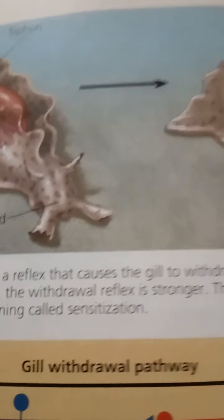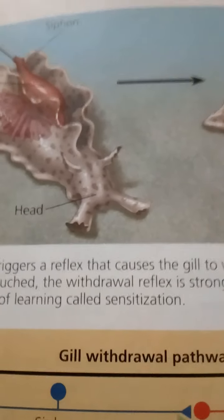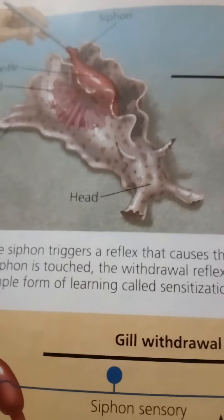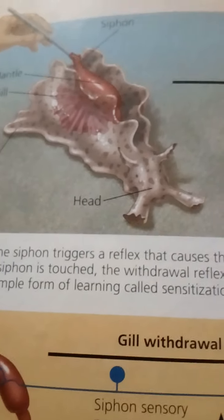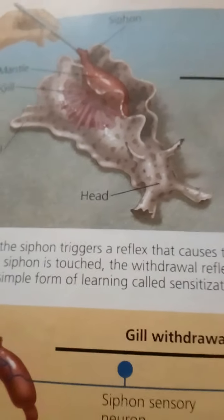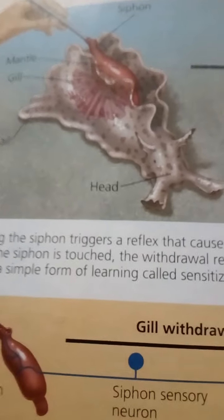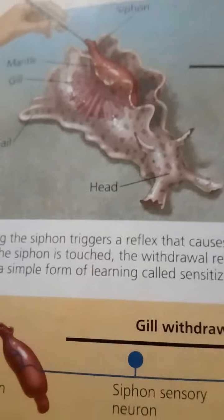The cellular mechanisms of LTP have been studied most thoroughly at synapses in the hippocampus, where presynaptic neurons release the excitatory neurotransmitter glutamate.